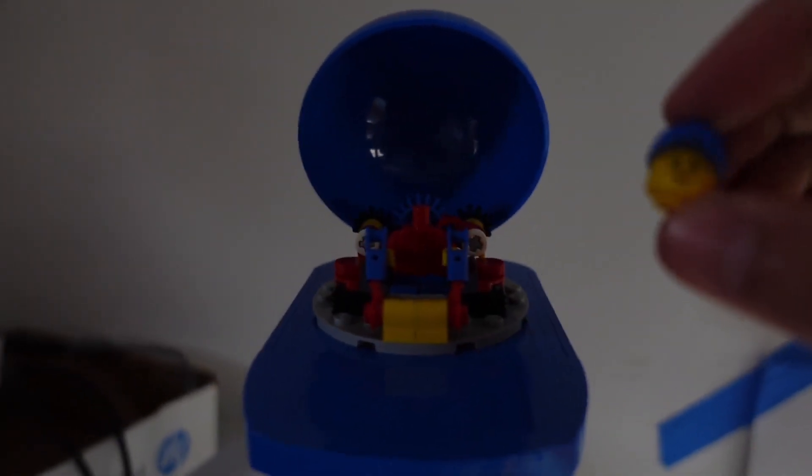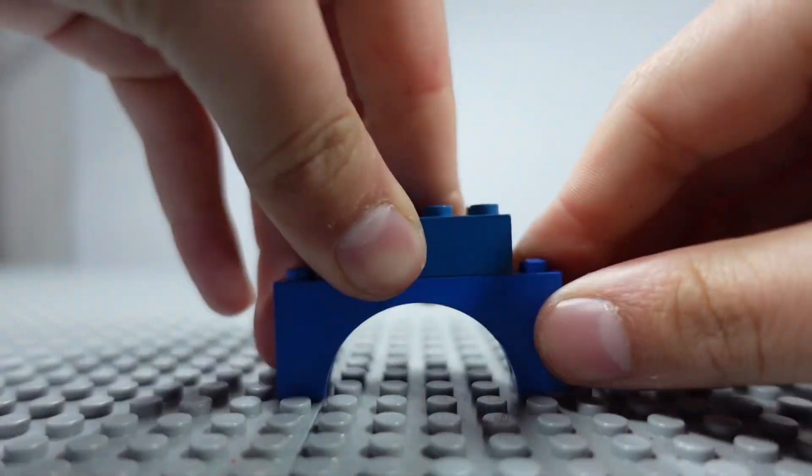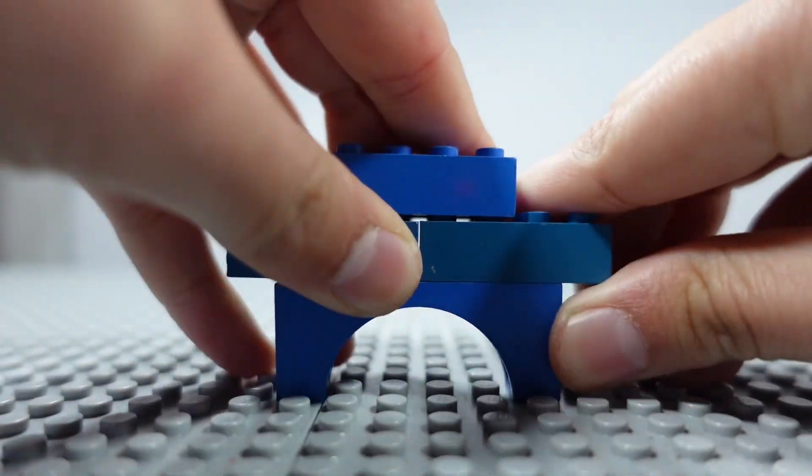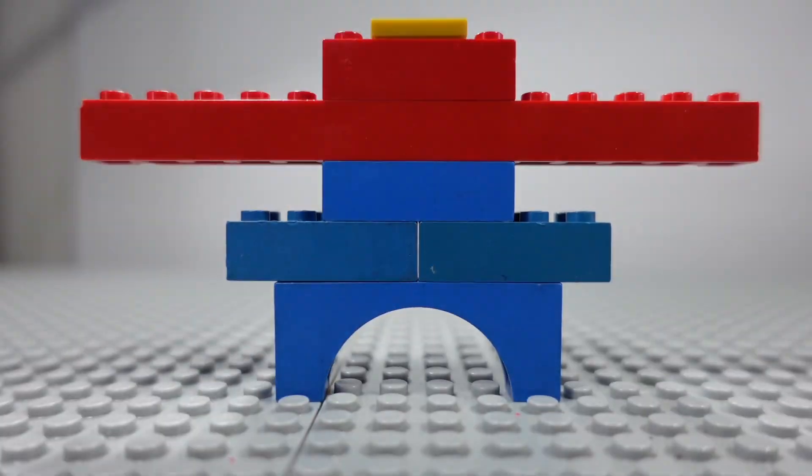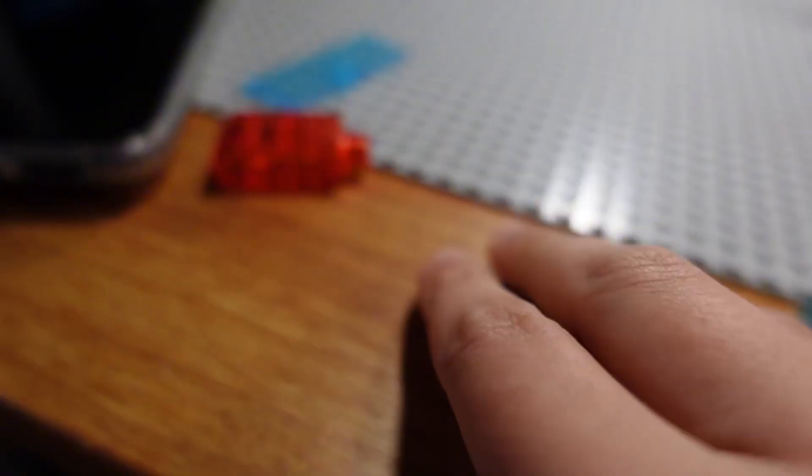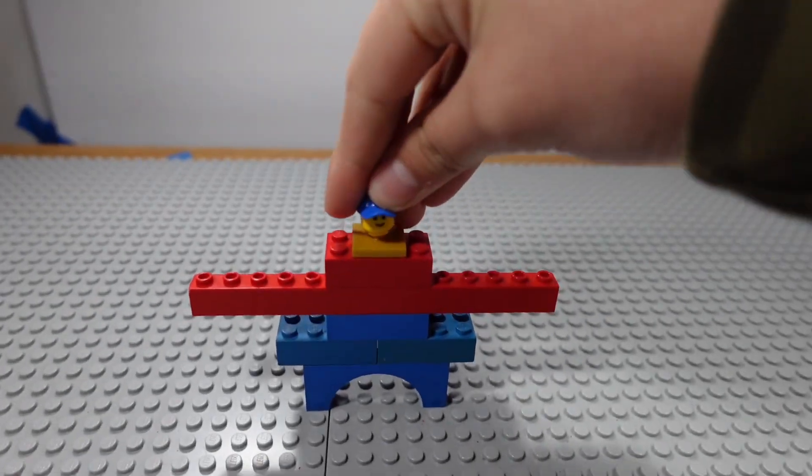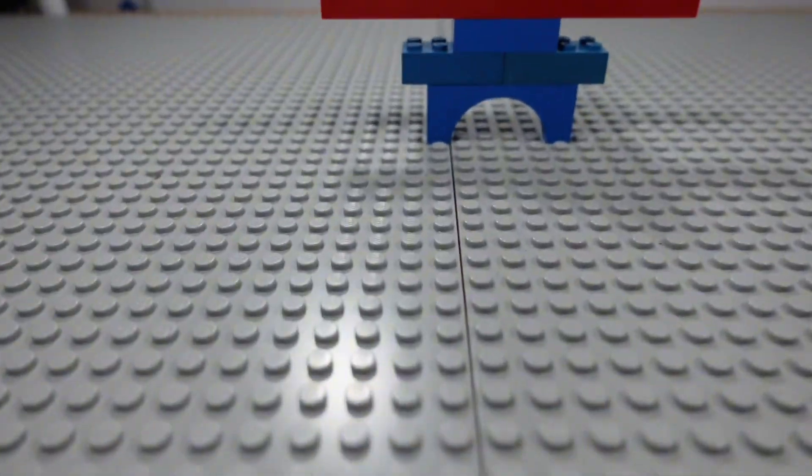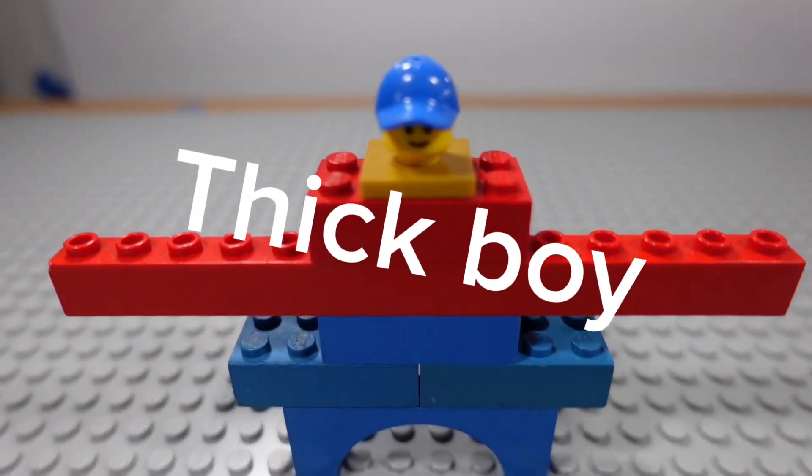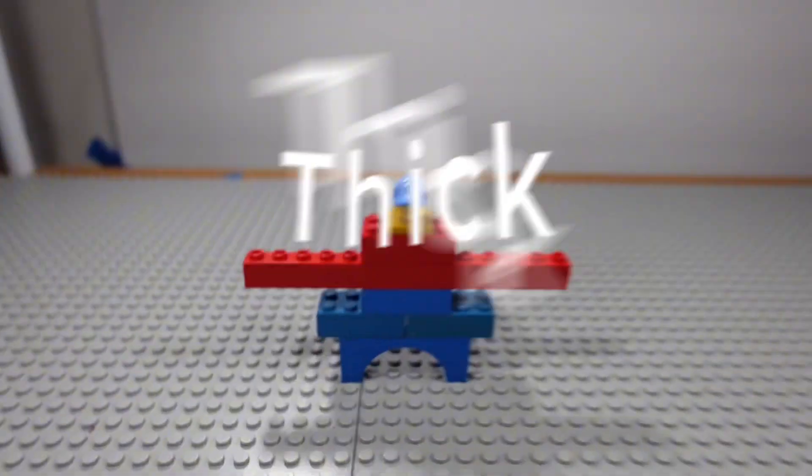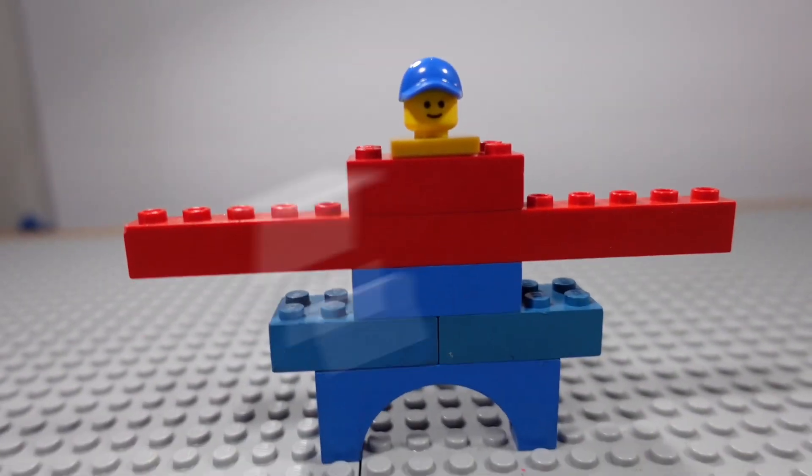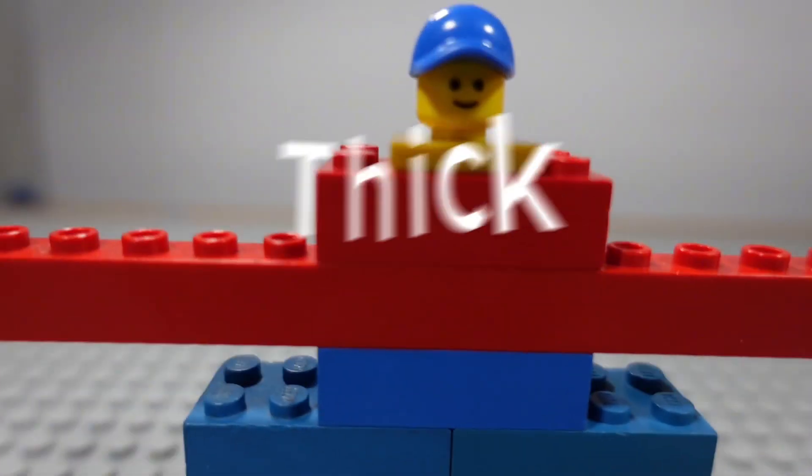This one you'll need this guy's head, got it, and then build the base of him. Once you're done with the body, you get the head, put it on top, and I call this one Thick Boy. He's thick. Thick Boy.